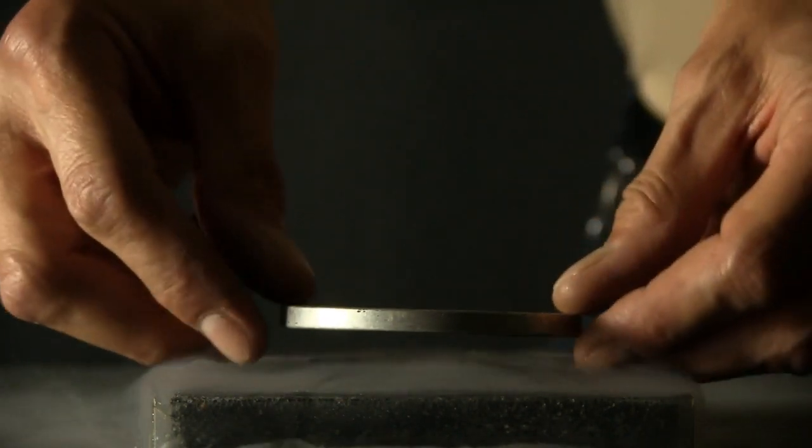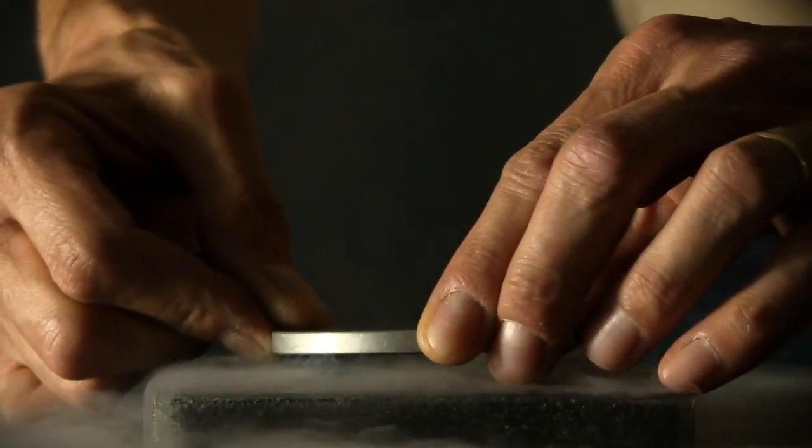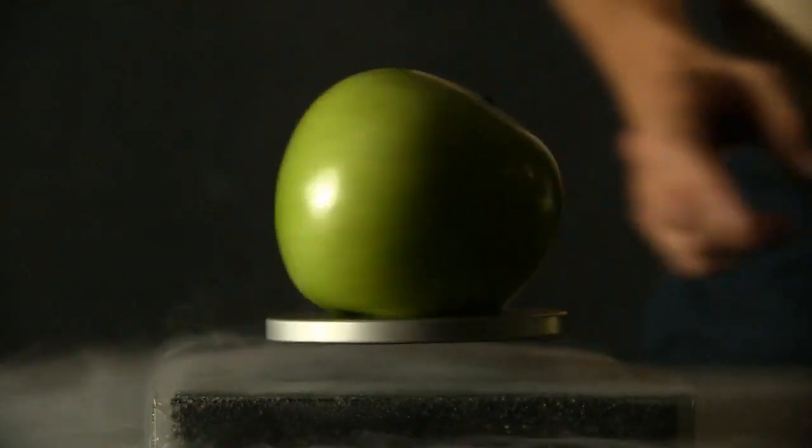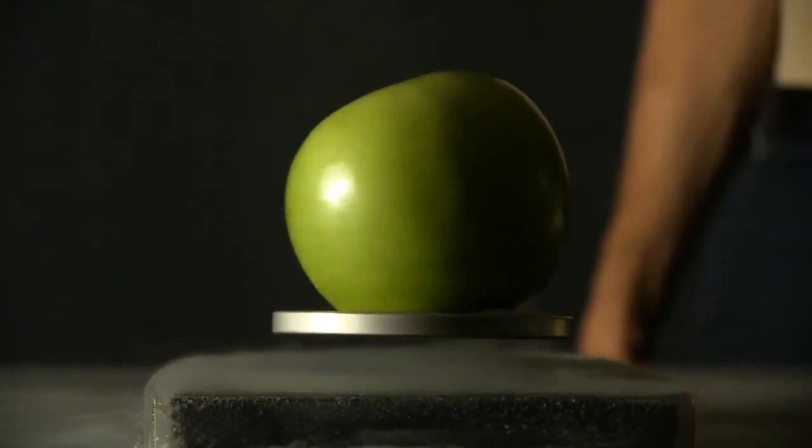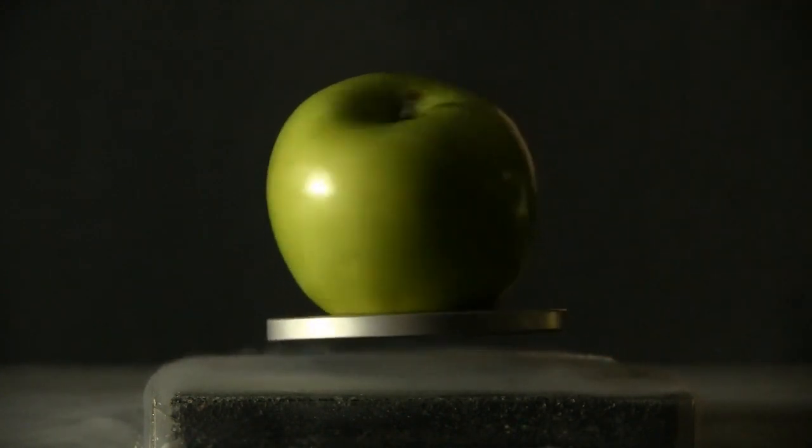If I flip this over, it should still work. And you can see I still get repulsion. So that's a property of the Meissner effect, it doesn't matter the orientation of magnetic field, you always get that repulsion.